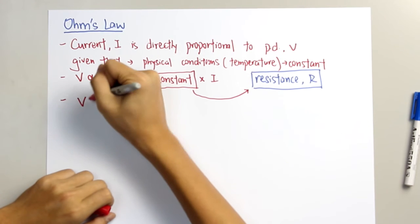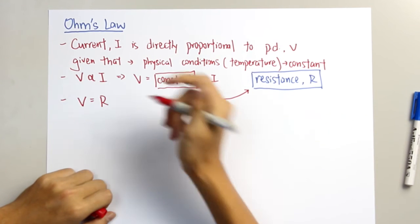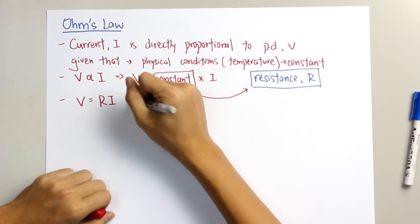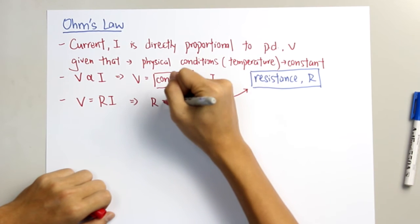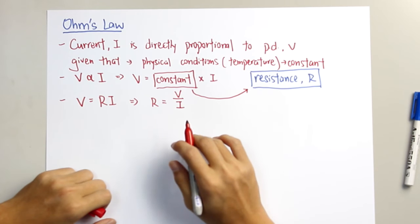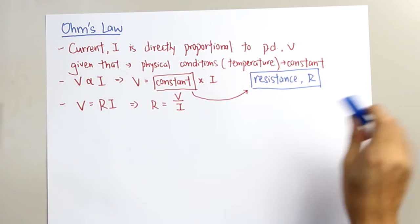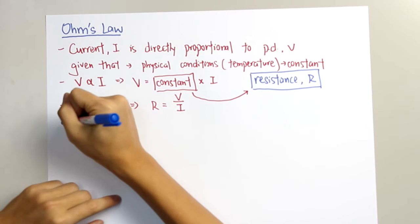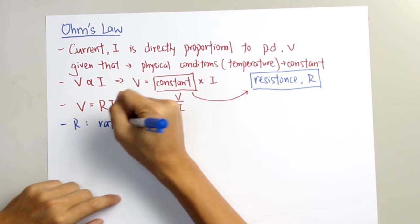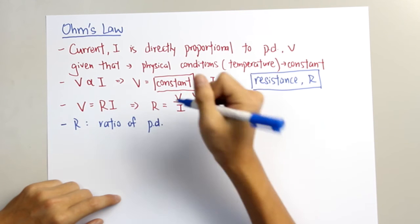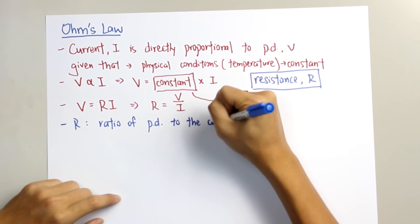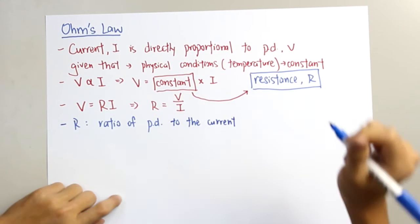By deriving the formula V equals resistance times current, we can get that resistance R equals the potential difference divided by the current. So we define resistance as the ratio of potential difference across the conductor to the current that flows through the conductor.